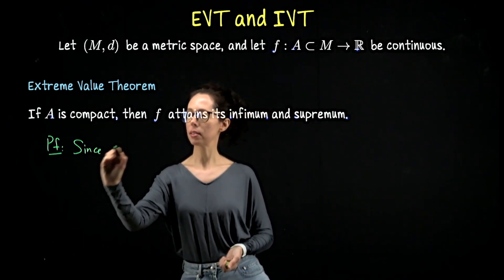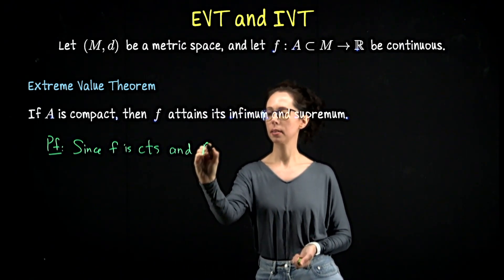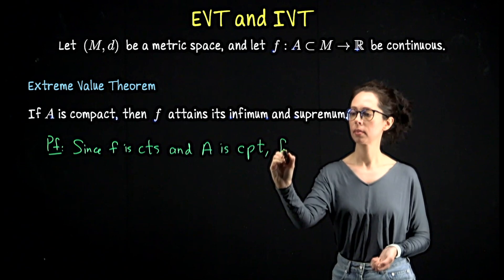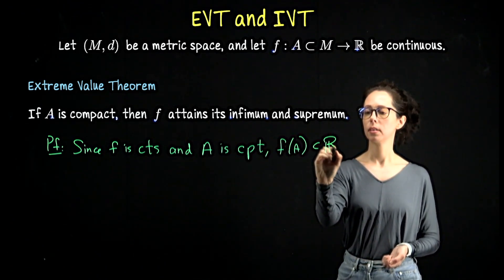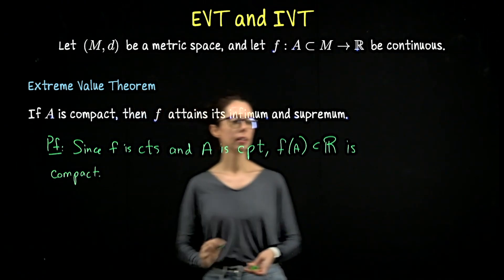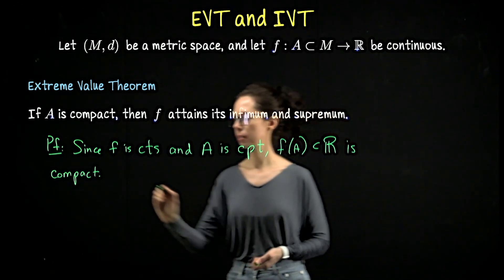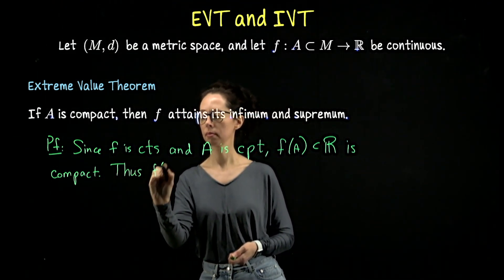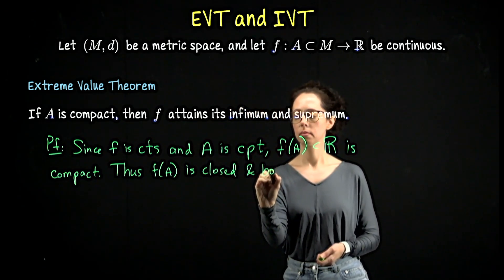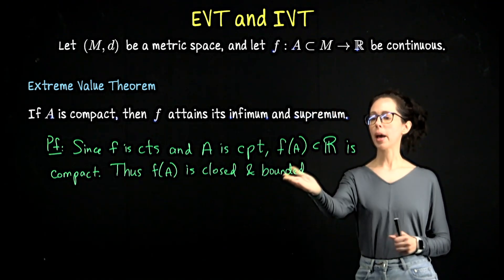In an earlier video, we proved that the image of a continuous function on a compact set is compact. So we will open with that. Since f is continuous and A is compact, f(A) is compact. Notice this is a compact subset of R. All compact sets are closed and bounded, so f(A) is closed and bounded.